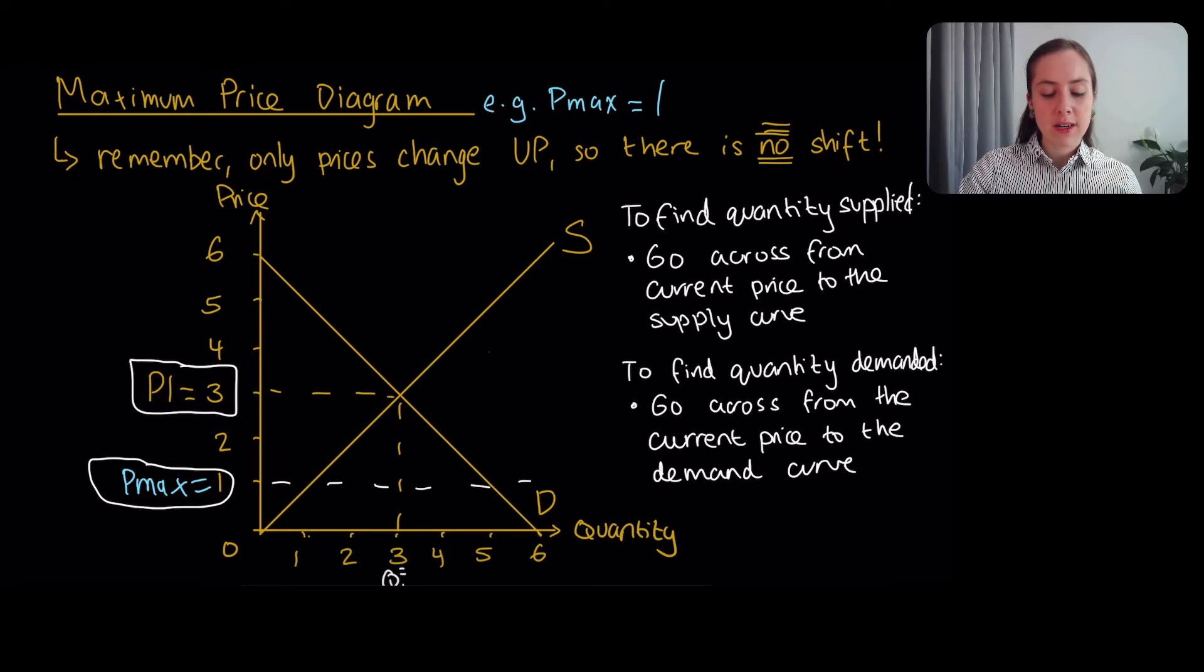In other words, prices, with this maximum price, prices change downwards. So there's no shift, it's just going to be a movement. We've talked about how there's going to be a contraction in the supply. That's the contraction. And at the same time, there's going to be an expansion in the demand, going to be those movements along because of what we've just discussed.